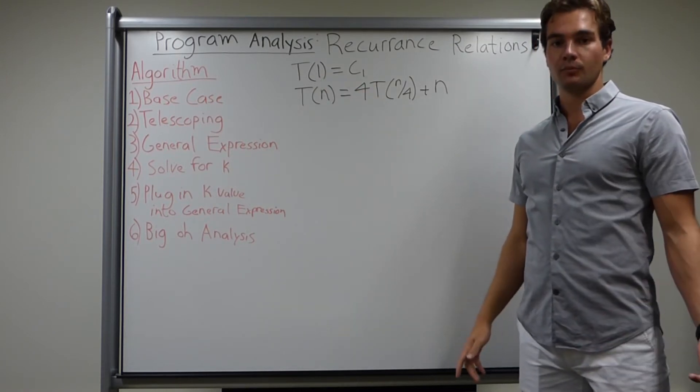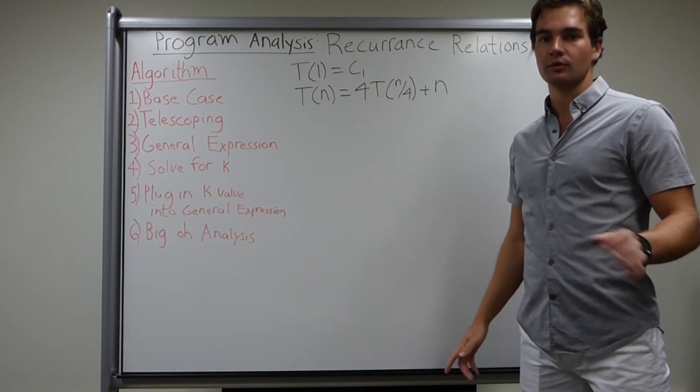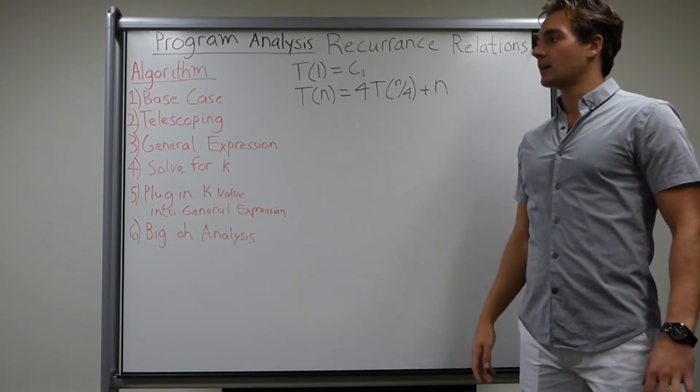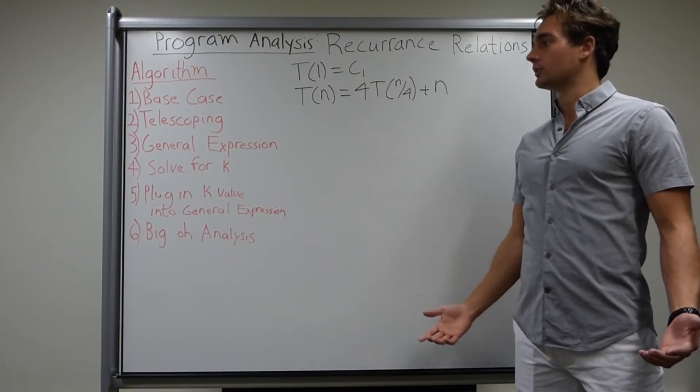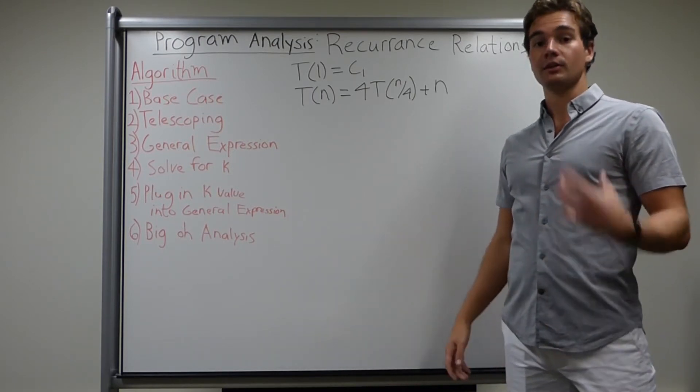Then we're going to do telescoping. All that is, is just constant substitution back into the recurrence relation. Then, after we notice a pattern, we're going to come up with a general expression to describe the relation in terms of a variable k.